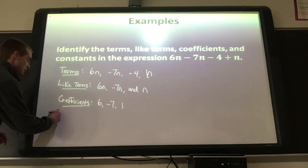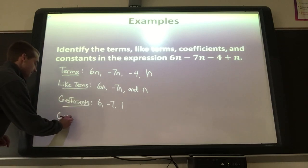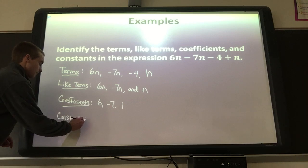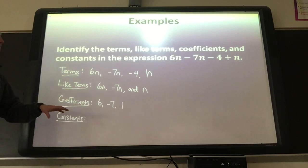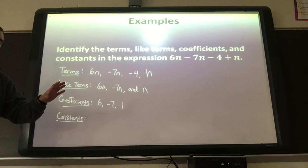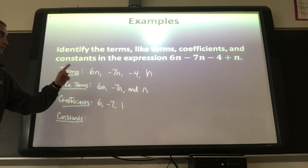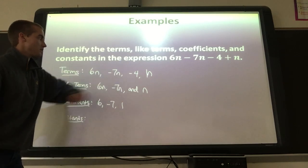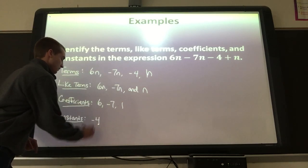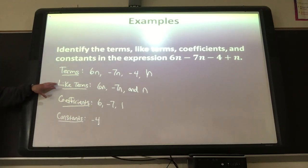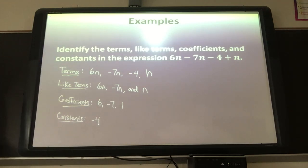And then last, the constants. Remember, constants are the numbers that don't have a variable. There's only one here: negative 4. That's the only constant. So those are our terms, like terms, coefficients, and constants.